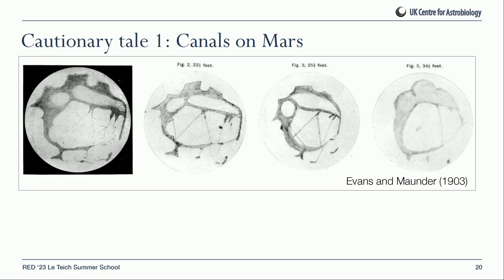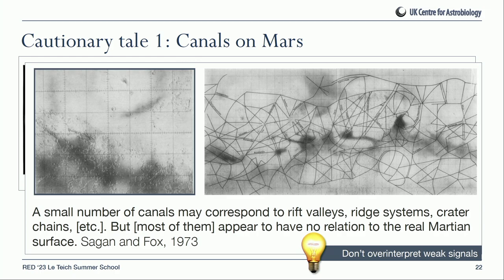The reasoning Wallace deployed is still relevant today — it can't be a biosignature if the environment is not habitable. As our images of Mars improved, those canal-like features steadily disappeared. In the 1970s Carl Sagan and colleagues reflected that although a small number of those features might correspond to real features of Mars like valleys or ridges, most had no real relation to the Martian surface — likely due to telescope limitations, the human tendency to see patterns where there aren't any, and possibly some optical effects.